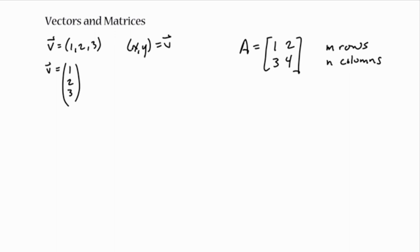My brain thinks of matrices as being stacks of row vectors; some people might think of them as being smooshed together column vectors — whatever works for you. A matrix that has the same number of rows and columns is called a square matrix. Square matrices have a lot of special properties and you'll see quite a lot of them as we go on.